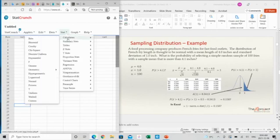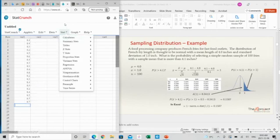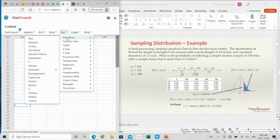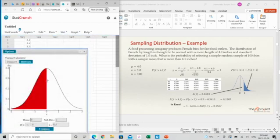You go to Stat, Calculators, and open Normal. If you open normal, it appears the standard normal distribution by default. The mean is zero and the standard deviation is one. This is the standard normal distribution.